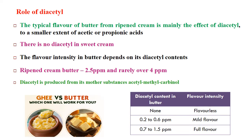The typical flavor of butter from ripened cream is mainly the effect of diacetyl, and to a smaller extent acetic or propionic acids. There is no diacetyl in sweet cream; after fermentation with specific aroma-producing cultures, diacetyl is produced and gives the flavor. The flavor intensity depends on diacetyl content. In ripened cream butter, diacetyl is around 2.5 ppm and rarely above 4 ppm. Diacetyl is produced from its precursor acetyl methyl carbinol. At 0.2–0.6 ppm there is mild flavor; at 0.7–1.5 ppm there is full flavor.